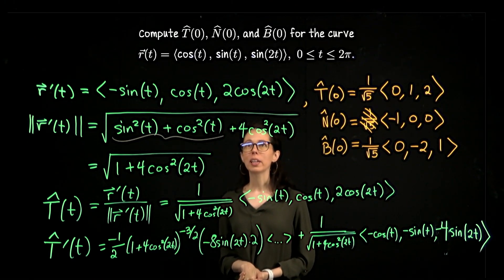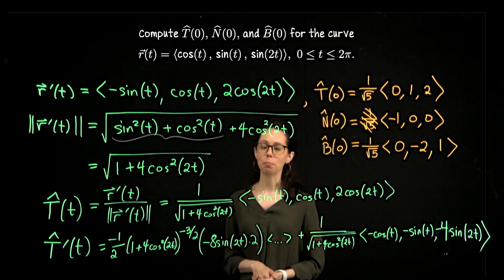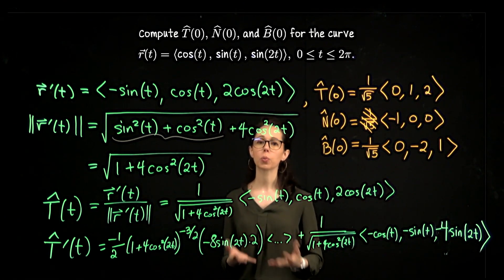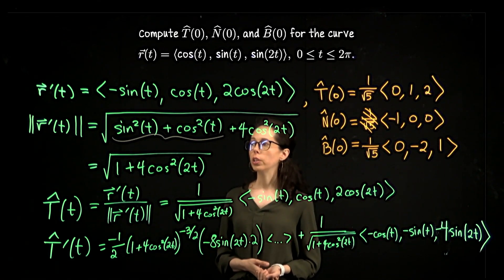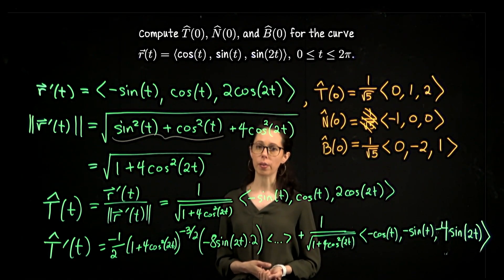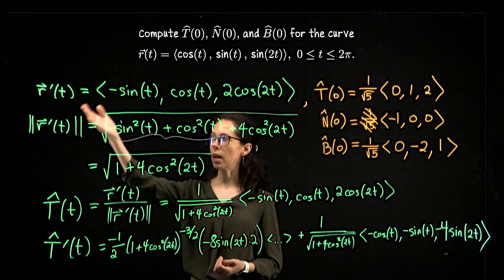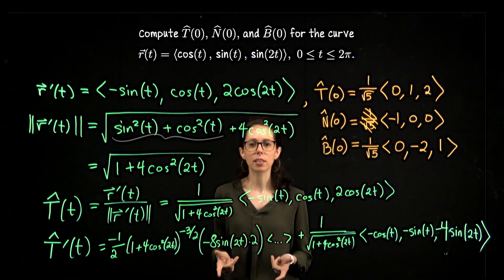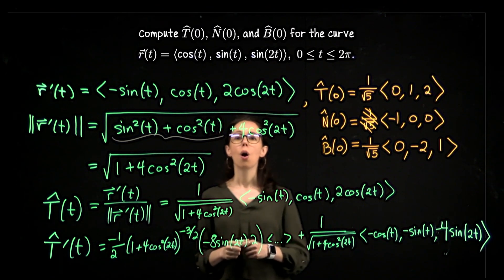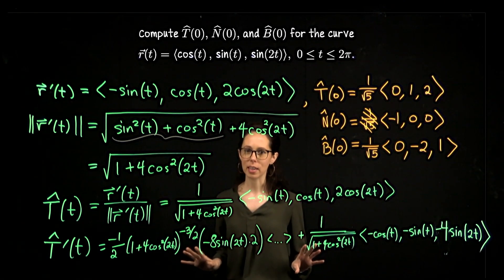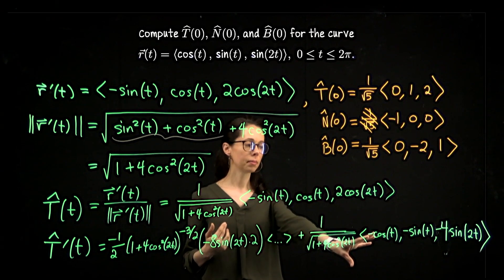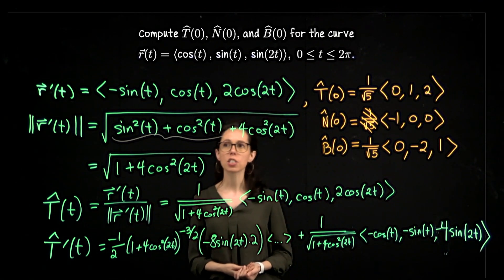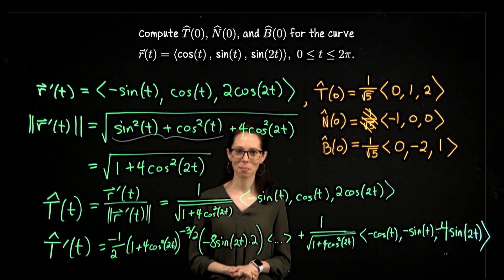To recap: we wanted to find the Frenet frame T hat, N hat, and B hat for this parametrized curve at one particular value of the parameter. You need to keep the parameter around as long as you need to take derivatives — meaning you need velocity and speed in terms of general t so you can write the unit tangent vector as a function of t, since the last thing you do with it is differentiate. Once you get T hat prime, you can plug in t equals 0, make the resulting vector unit length, and then cross T hat and N hat to get the unit binormal vector.